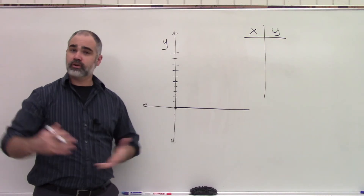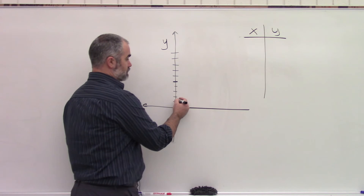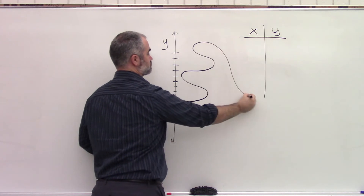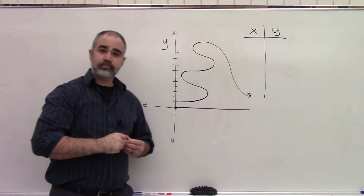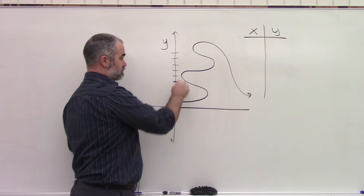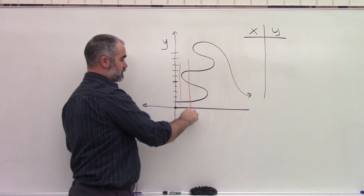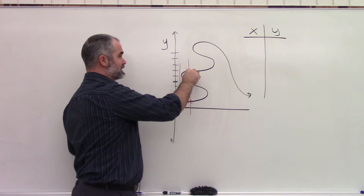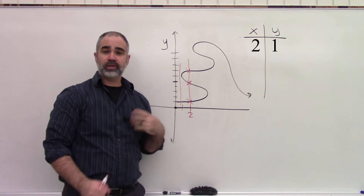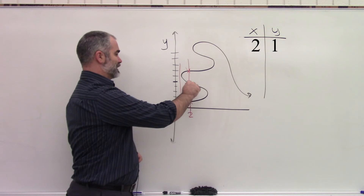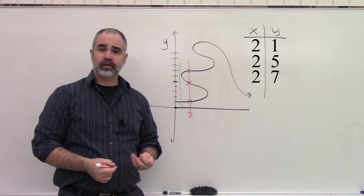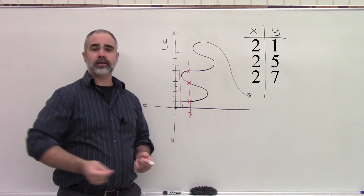It is possible to have graphs that are not functions. Let me give you an example. This is a pretty weird looking graph. Look what happens when I try my vertical line test — I'm good right here, but at this point I'm hitting three different places on the graph. So maybe I'm plugging in the number two: on the table, I plug in two and I'm getting one, five, and seven. I'm getting three different answers.